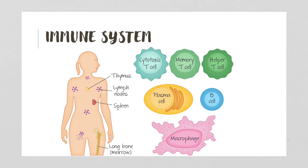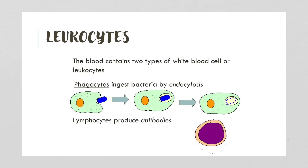Immune functions take place in the bone marrow, spleen, lymph nodes, and thymus. There are two types of leukocytes: phagocytes, or macrophages, which ingest bacteria by endocytosis — extending their cytoplasm to engulf and digest invaders — and lymphocytes, which produce antibodies. Phagocytes are non-specific; lymphocytes are more specific.